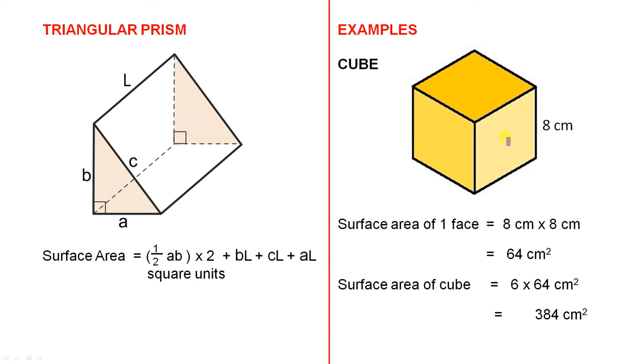Let's look at some examples. Here's a cube with a side of 8 centimetres. The surface area of one face is 8 centimetres by 8 centimetres, which is 64 square centimetres. So the surface area of the cube is 6 times 64 square centimetres, which is 384 square centimetres.